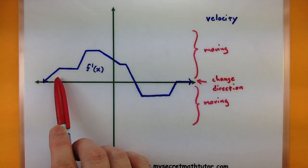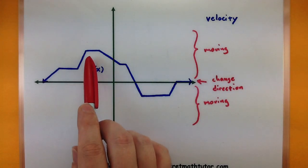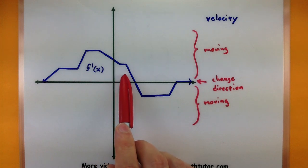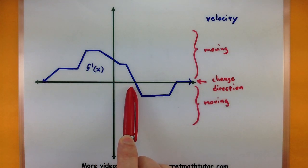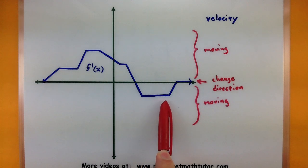So here's what we can see from this graph. As this particle is starting off, it's moving, it's actually moving away, moves and moves and then it keeps moving. And then right here, it turns around, and now it's moving in the other direction.